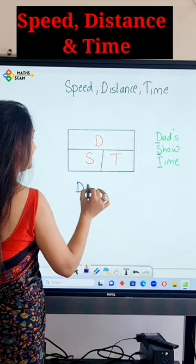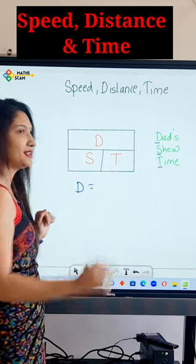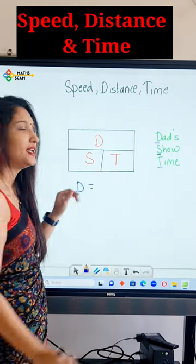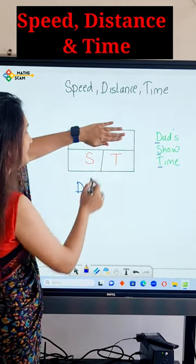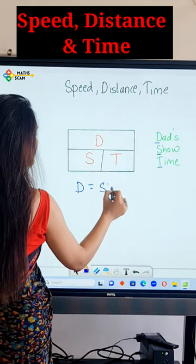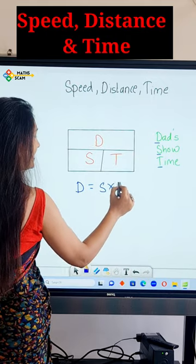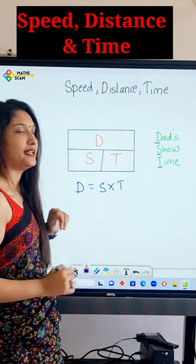To find the formula for distance, which is D, you just hide the D, and it will be S times T — that is speed times time.